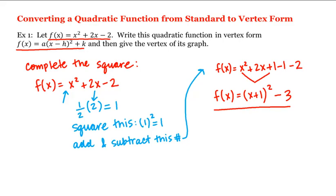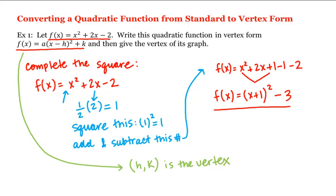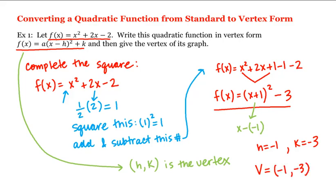We've now written our function in vertex form. When we write a quadratic in vertex form, (h, k) is the vertex of its graph. We have x + 1, which we can think of as x - (-1), so h = -1 and k = -3. The vertex is the point (-1, -3).